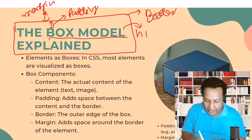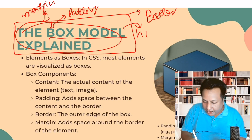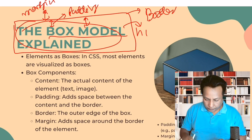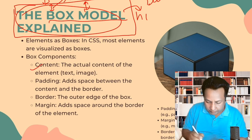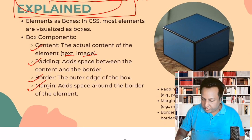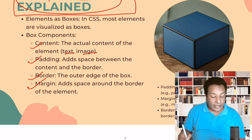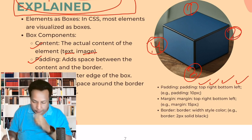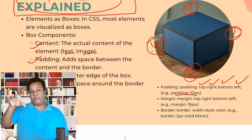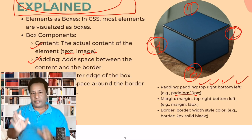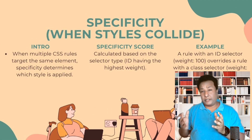So the box model works like this: you have the content of the element, then from the content to the border the spacing is called padding, then you have the border, and after the border you have the margin. Content can be text or an image. Padding and margin can be applied individually — top, right, bottom, left. If you write 'padding: 10' it applies to all four sides, but you can also specify 'padding-right' or 'margin-left' individually.